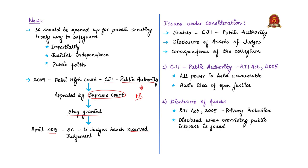Earlier in 2009, two issues arose: the status of the Chief Justice of India as a public authority under the RTI Act 2005, and disclosure of assets of judges. Now, another issue is also under consideration — disclosing the correspondence of the collegium, which includes information related to the nomination process and reasons for not elevating or elevating a judge. The author states the office should be subject to the RTI Act, as in a modern constitution all power must be held accountable and judicial power is no exception, and also to uphold the basic idea of open justice. Regarding disclosure of judges' assets, the RTI Act protects individual privacy but authorizes disclosure when overriding public interest is found.